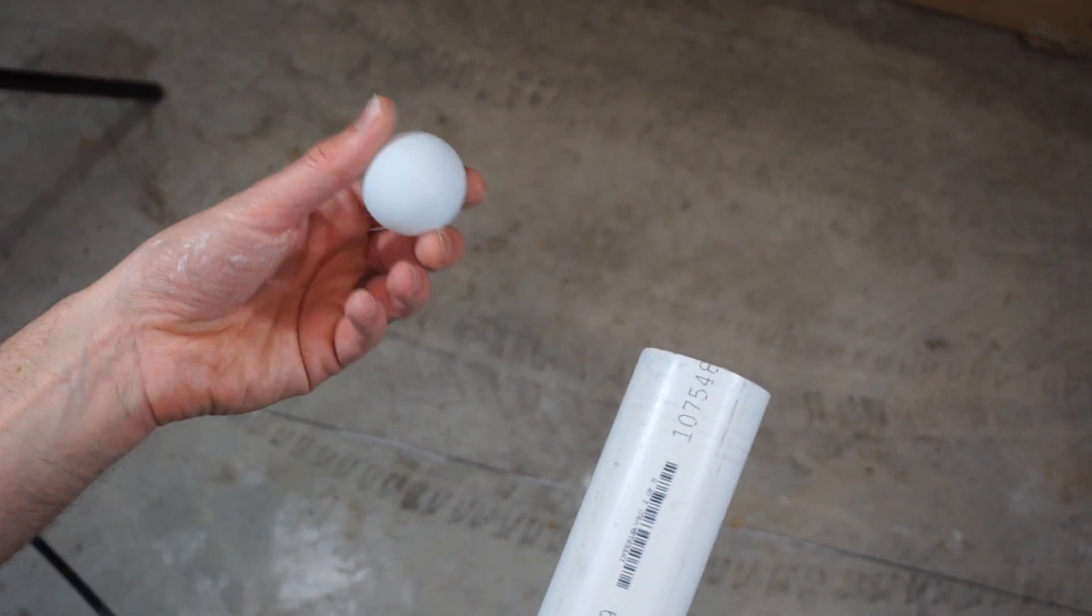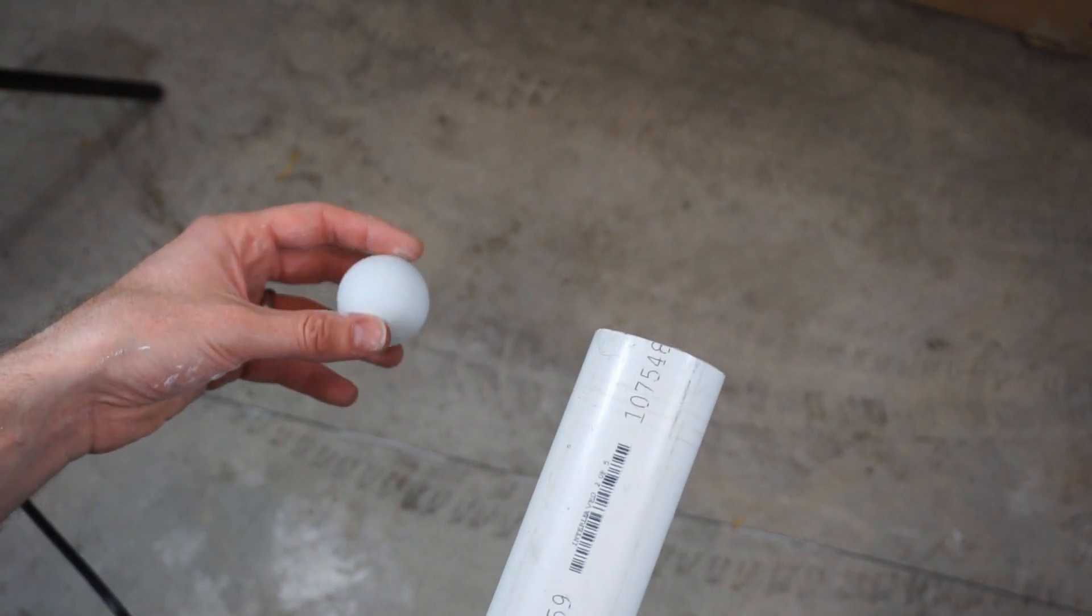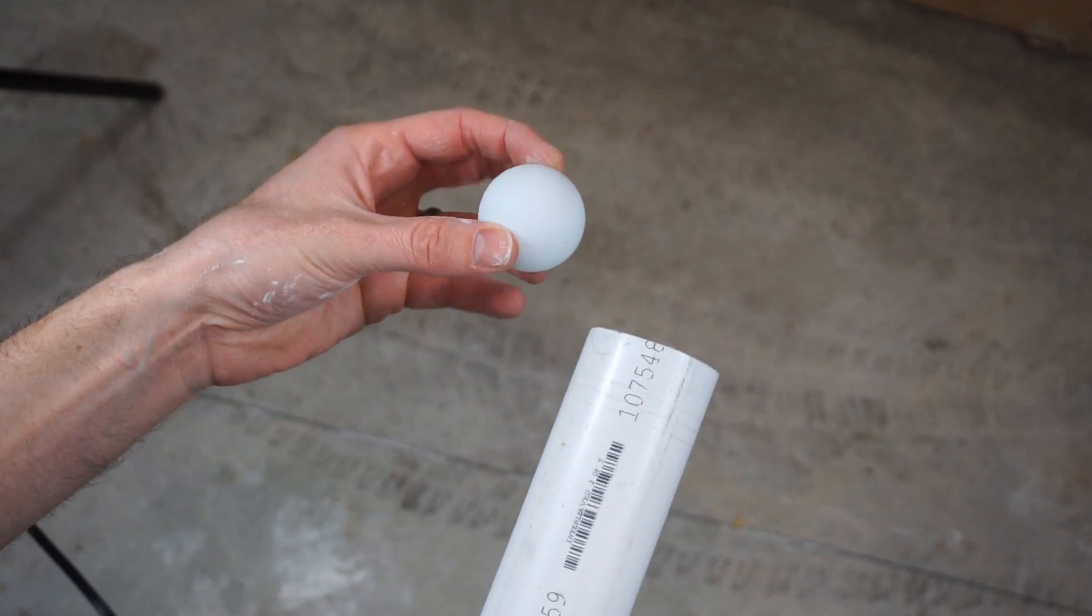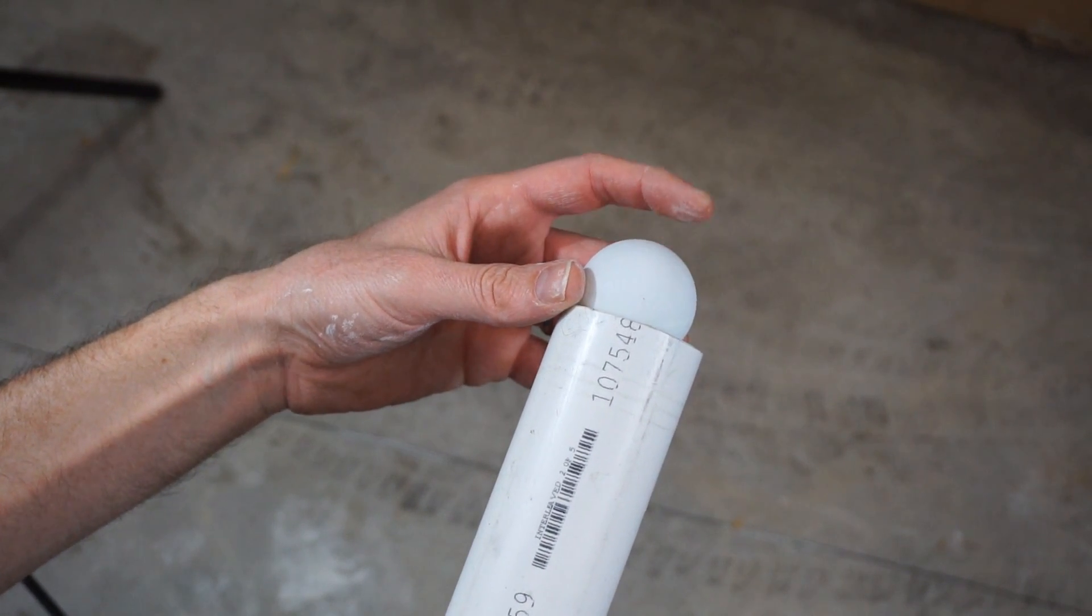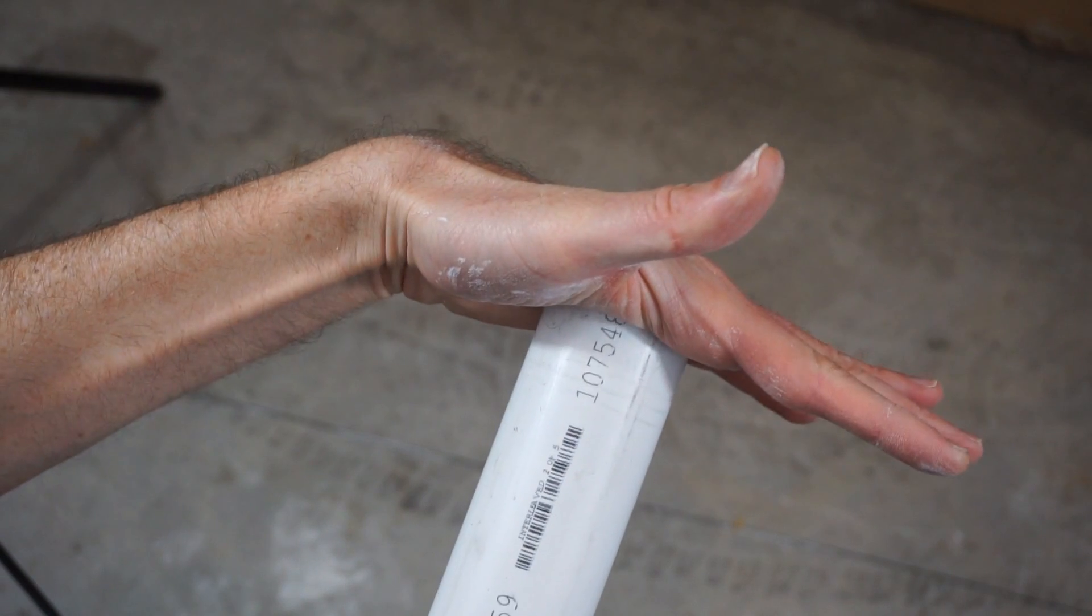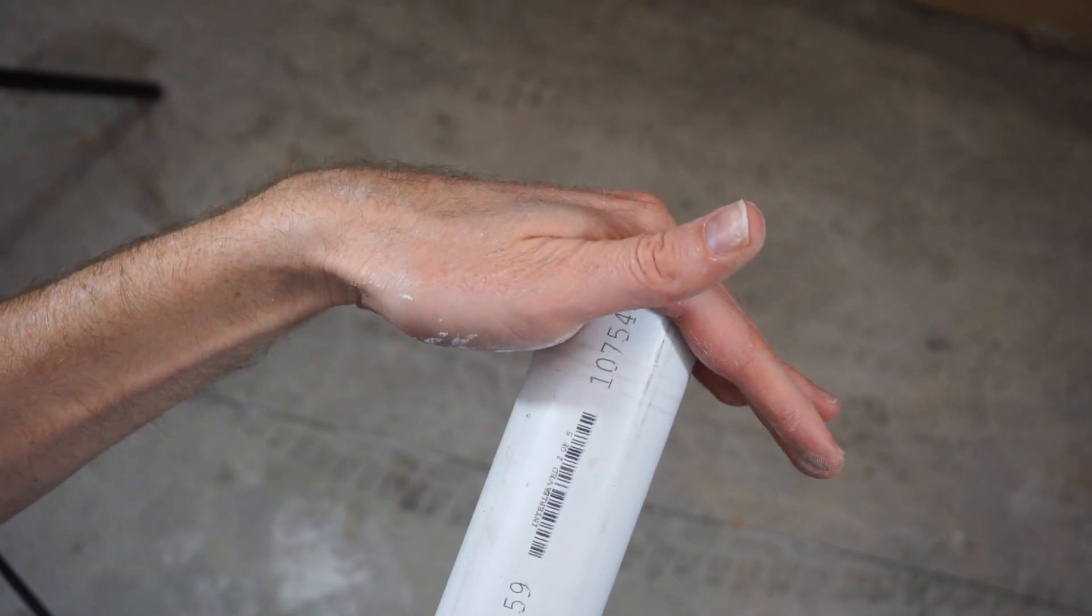Okay, so if you haven't seen any of my other ping pong cannon videos, here's how this works. I'm going to put a ping pong ball into this PVC pipe and I'm going to have a membrane on this end and a membrane on the other end and I'm going to suck all the air out of it so it's going to be able to hold the vacuum because of the membranes that are over it.